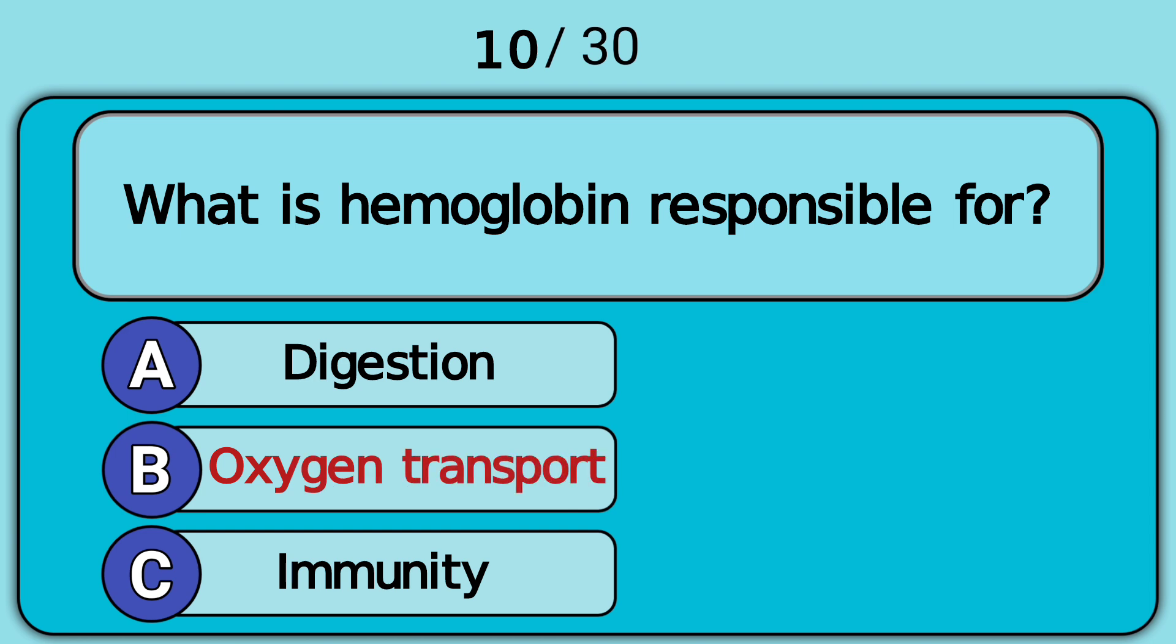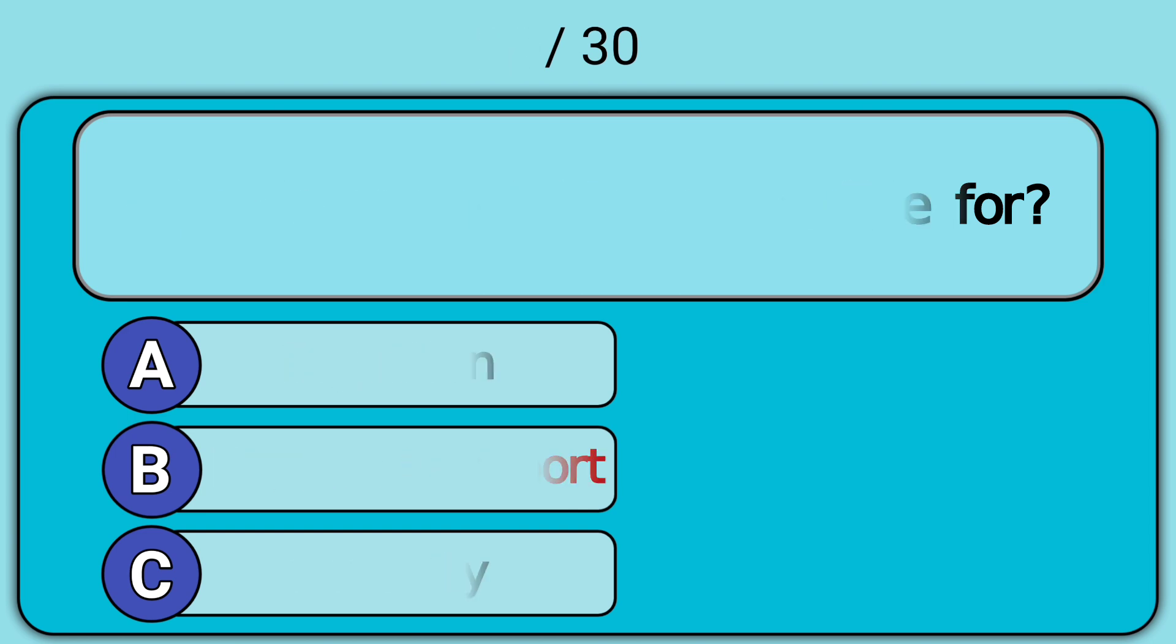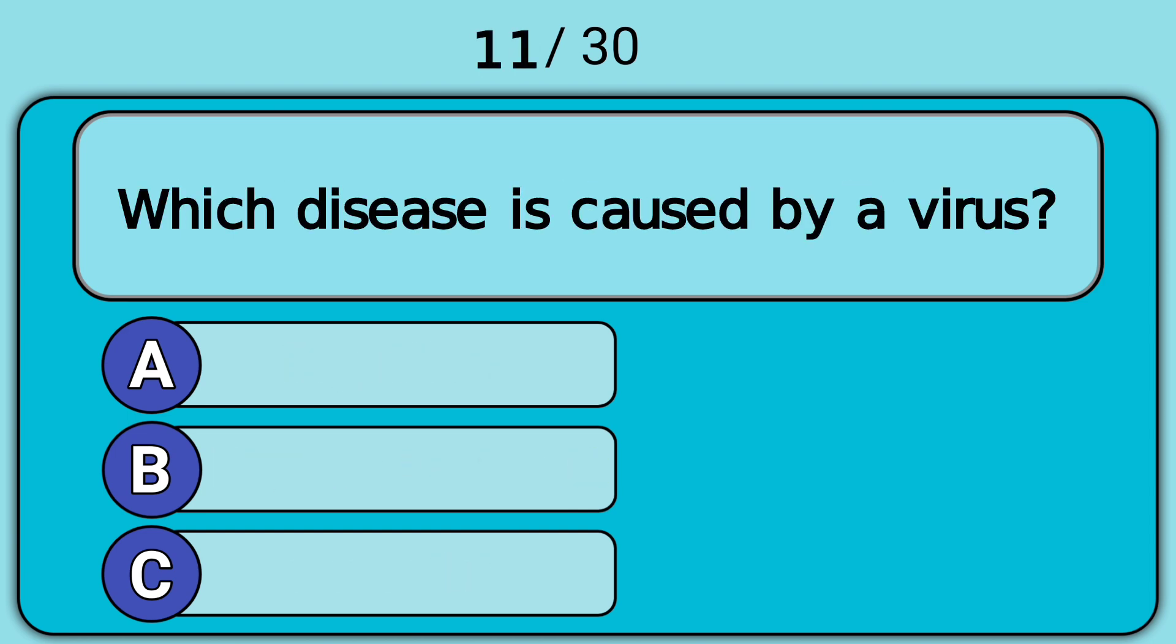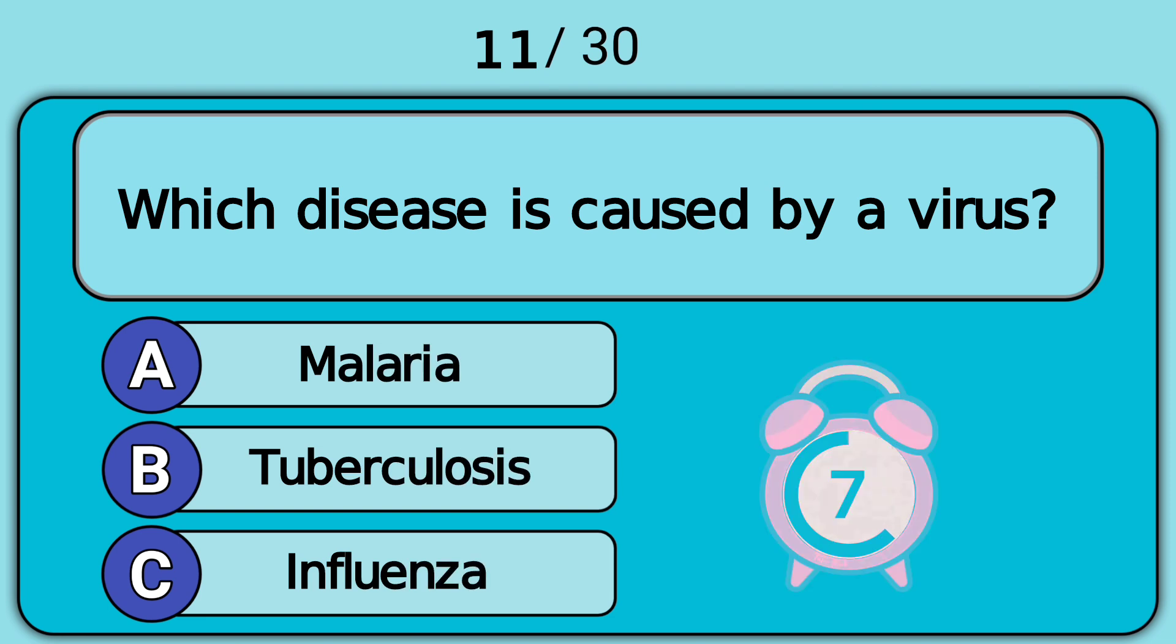What is hemoglobin responsible for? Answer B. Oxygen transport. Which disease is caused by a virus? Answer C. Influenza.